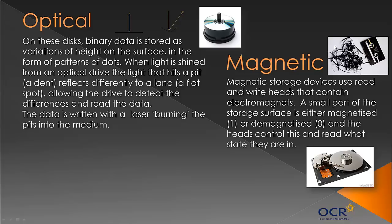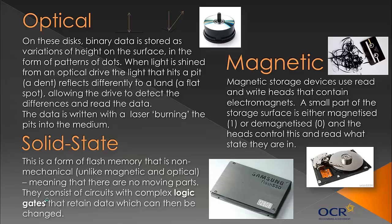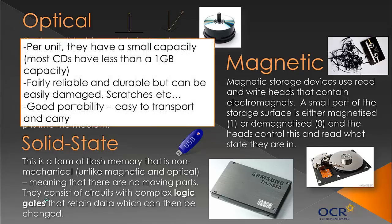Finally, solid-state technology — a form of flash memory — has been around since the 1970s but you may have heard more about it recently. Unlike magnetic and optical storage, it is non-mechanical, meaning there are no moving parts. It consists of circuits with complex logic gates which retain data when turned off — making it non-volatile. An example is an SSD (solid-state drive). Flash memory has extremely high speeds, but capacities are generally lower than magnetic and optical drives for the same price. A USB thumb drive or flash drive is also solid-state flash memory.